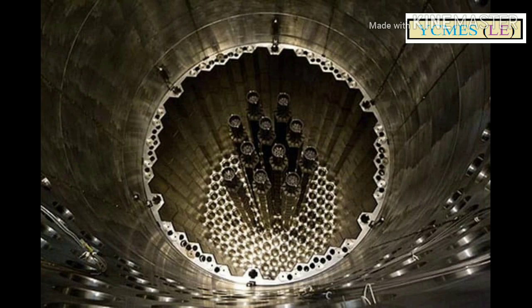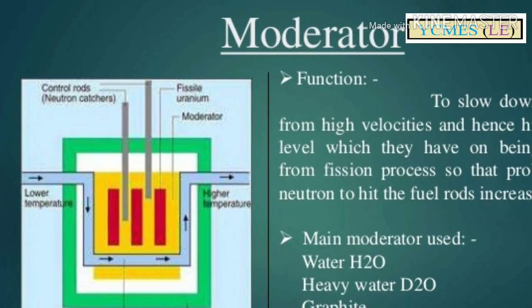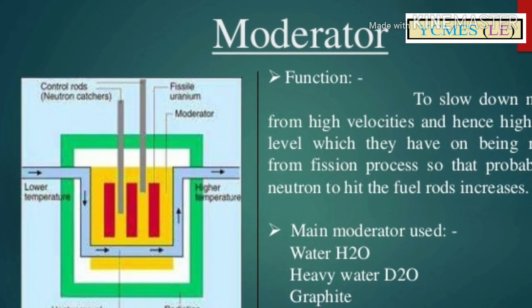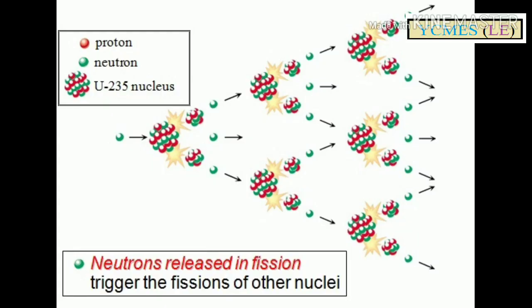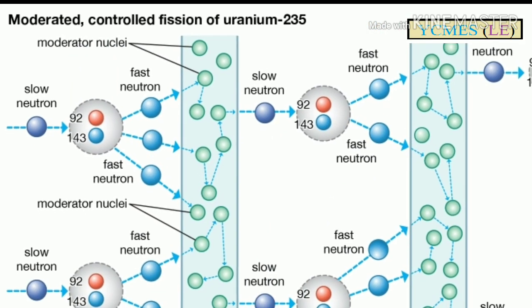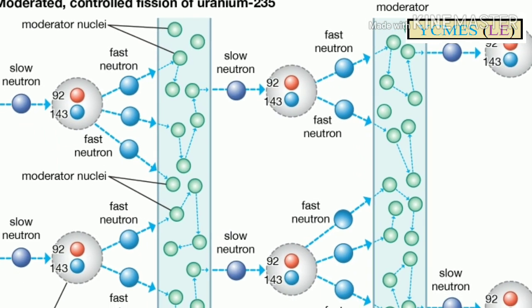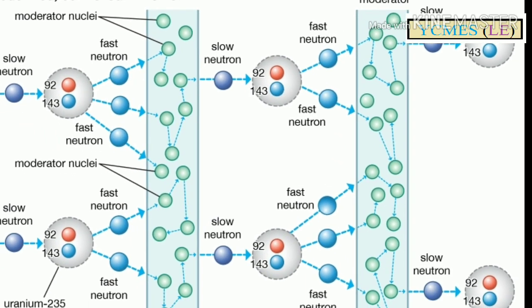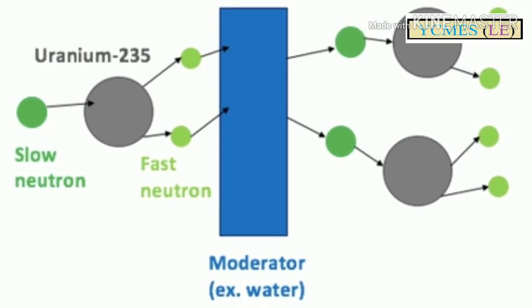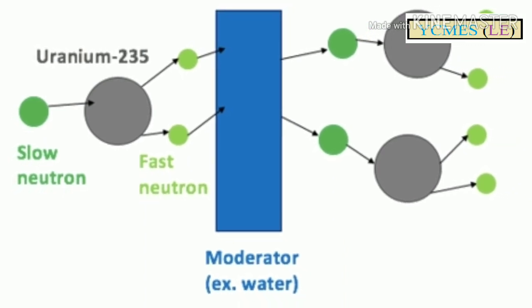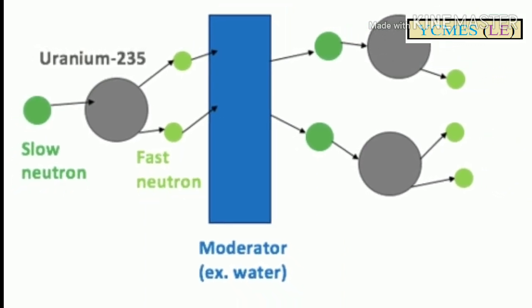Let's talk about the moderator. The moderator slows down the neutrons. Why slow down the neutrons? The neutrons move very fast, so the heat generation was less. For the need for the moderator, the moderator slows down the neutrons. For example, water is a good example.